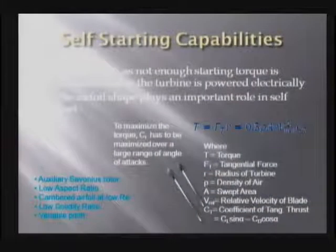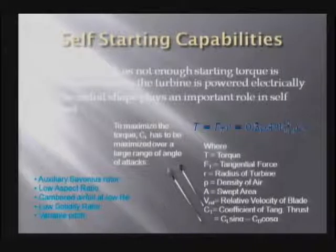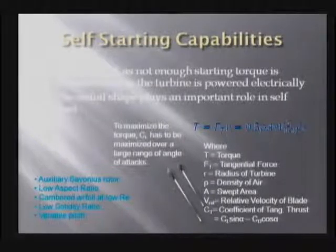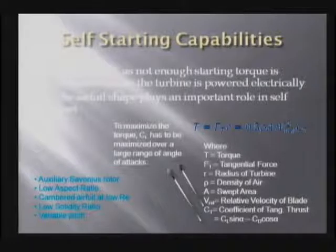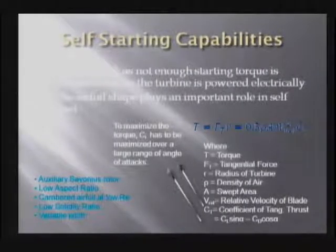One of the main problems with vertical axis wind turbines, and specifically the Darrieus wind turbine, which this one is, is the self-starting capability — it has none. But in recent research, if you look at airfoils, it can be done. The main formula which drives the whole airfoil is the torque, which is the tangential force times the radius of the wind turbine. This formula depends heavily on the coefficient of tangential thrust, which in turn depends upon the coefficient of lift. The coefficient of lift can be maximized and optimized according to the airfoil and the Reynolds number, and it can actually self-start in certain conditions.